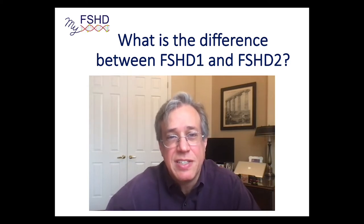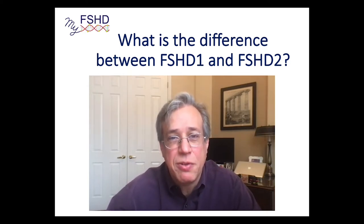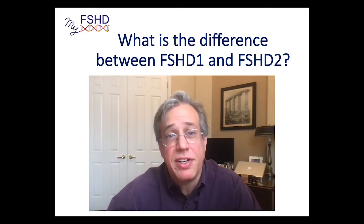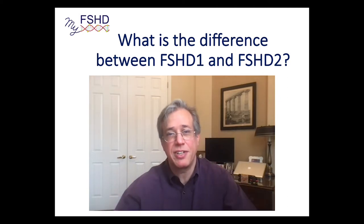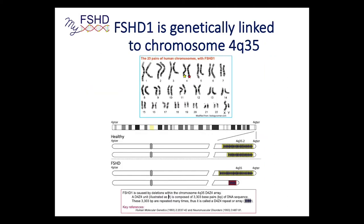I'm going to slow down and take you through the differences and similarities between FSHD1 and FSHD2. So we all know that FSHD is genetically linked to chromosome 4, and specifically the location 4q35. We have 23 pairs of chromosomes — one chromosome from mom and one from dad.